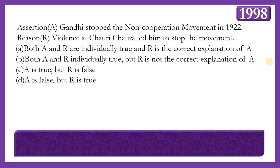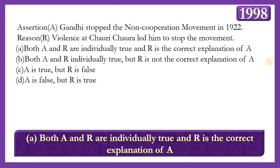Next assertion-reason question. Assertion: Gandhiji stopped the non-cooperation movement in 1922. Reason: Violence at Chauri Chaura led him to stop the movement. The answer is option A — both A and R are individually true and R is the correct explanation of A. On 5th February 1922, a large group of protesters clashed with police at Chauri Chaura in Gorakhpur district, set fire to the police station, and killed some police officials, leading Gandhiji to halt the non-cooperation movement.